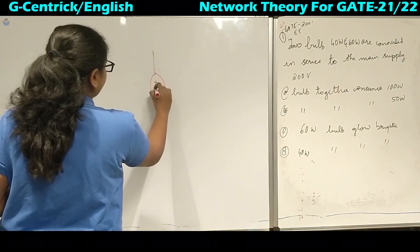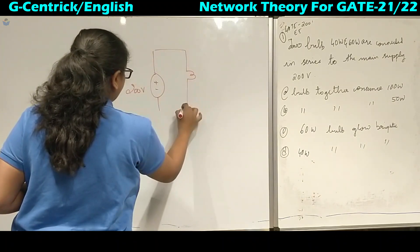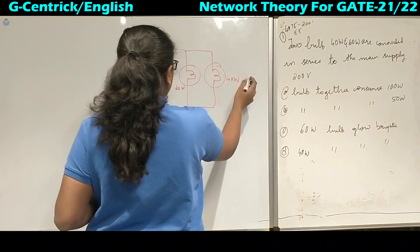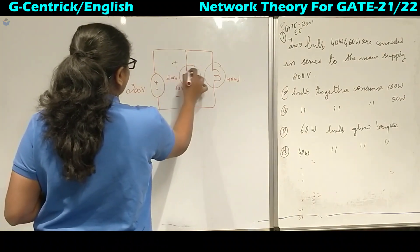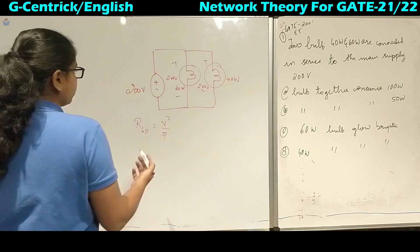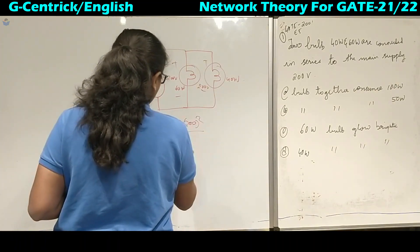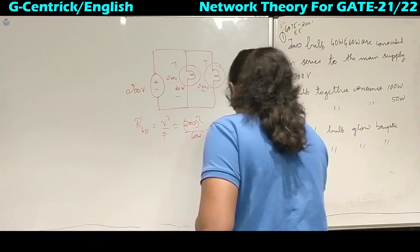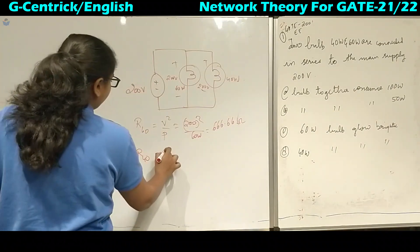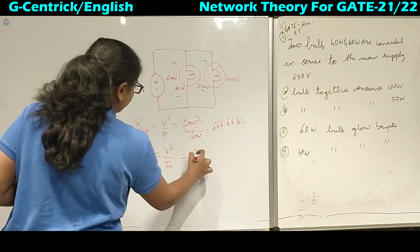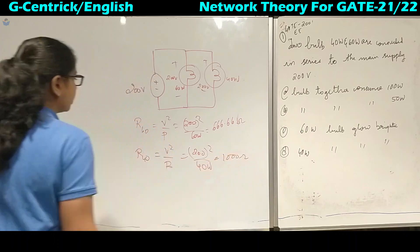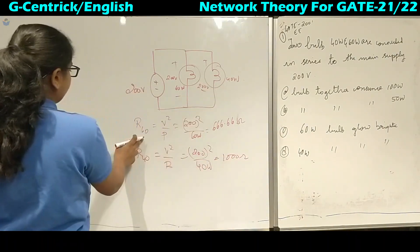If there is a power supply of 200 volts and two bulbs are connected in parallel — bulb 1 is 60 watts and bulb 2 is 40 watts — the voltage across each will be the same 200 volts because they are in parallel. Now we find the resistance values. R60 = V²/P = 200² / 60 = 666.66 ohms. Similarly, R40 = 200² / 40 = 1000 ohms.